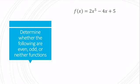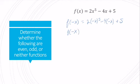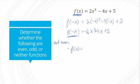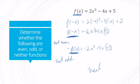For f of x equals 2x to the 5th minus 4x plus 5, I substitute in negative x: 2 times negative x to the 5th minus 4 times negative x plus 5, giving f of negative x equals negative 2x to the 5th plus 4x plus 5. This doesn't equal f of x, so it's not even. Now let's check negative f of x, which is negative 2x to the 5th plus 4x minus 5. Since the sign on the constant 5 is opposite in f of negative x versus negative f of x, they're not equal — so it's not odd either. Therefore this function is neither.